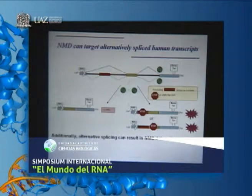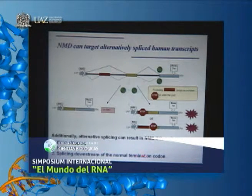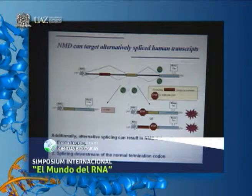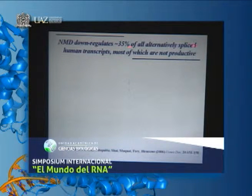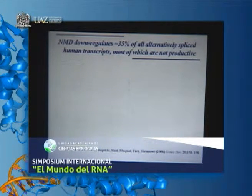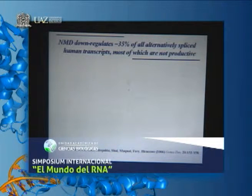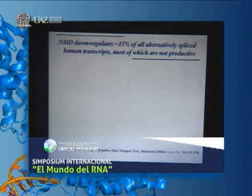Alternative splicing can result in NMD because of exon skipping, intron retention, or splicing downstream of the normal termination codon, such that if there's an exon-exon junction more than 50-55 nucleotides downstream of the normal termination codon, that generates NMD. NMD down-regulates about a third of all alternatively spliced human transcripts—probably the most prevalent way by which PTC-containing mRNAs are generated. This is remarkable when you consider that conservatively 90-95% of our genes encode pre-mRNAs that undergo alternative splicing. We have 20,000 genes, and many proteins come from a single gene, often regulated in a temporal, developmental, cell-type-specific way because of alternative splicing.